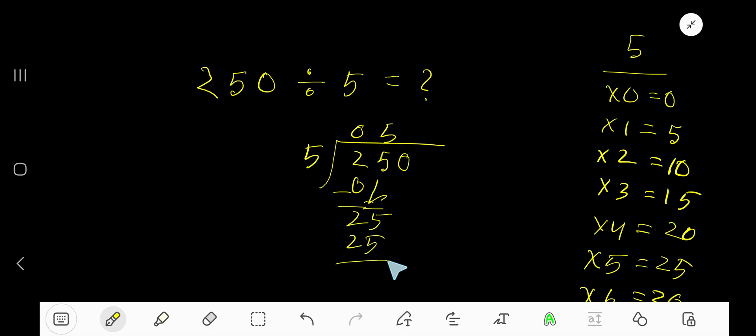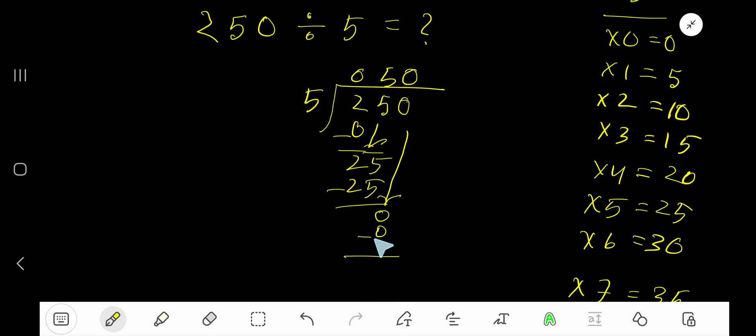Subtract to get 0, then bring down this 0. 5 goes into 0 how many times? 5 goes into 0 zero times, right. 0 times 5 is 0. If you subtract, you're getting 0. Since your remainder is 0, we are done. So 50 is our answer.